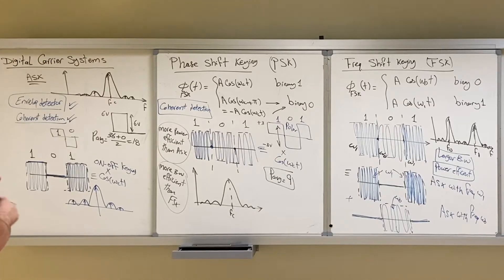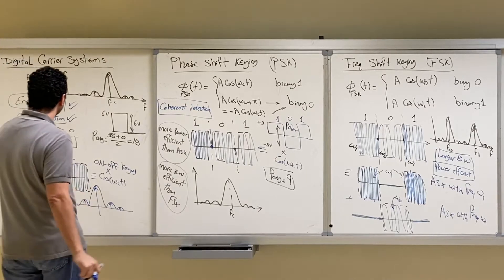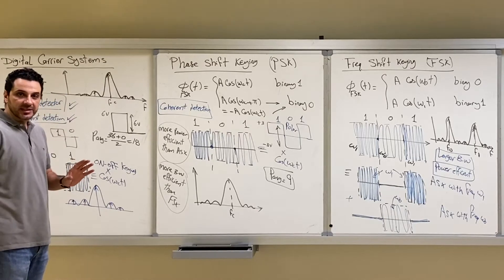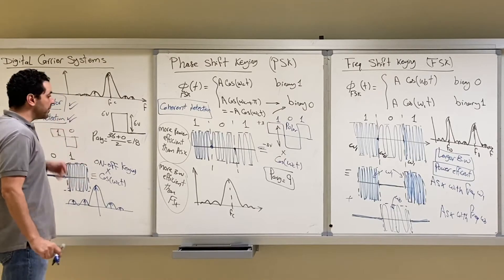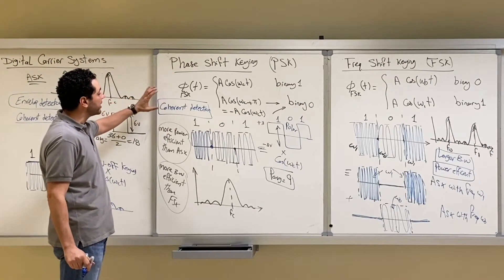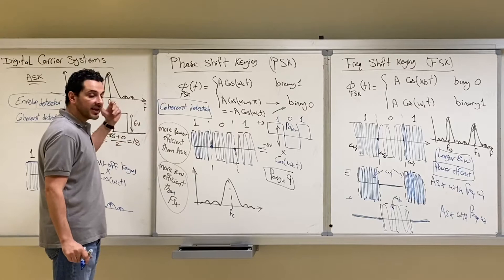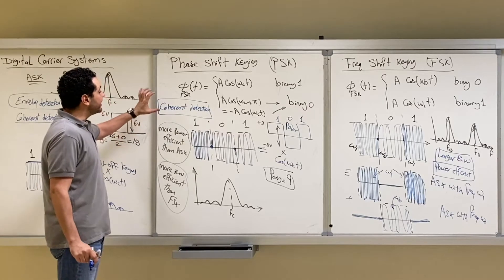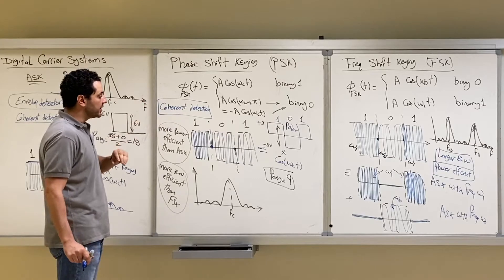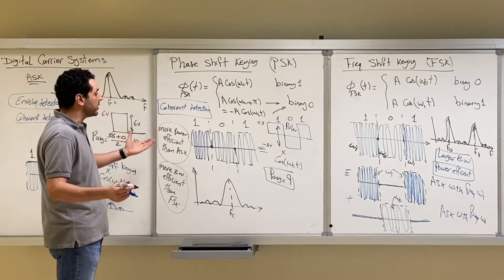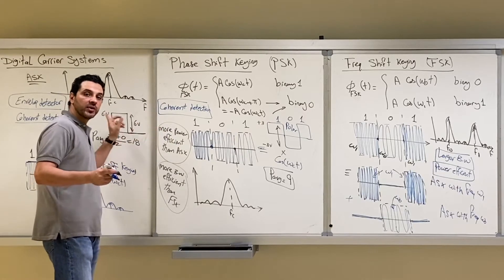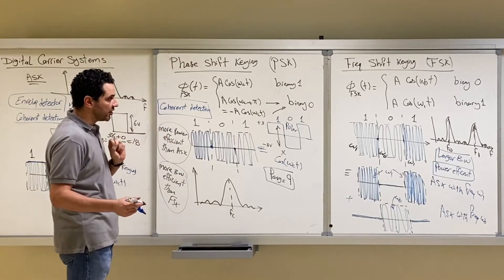In the previous video, we saw that for ASK, we can use an envelope detector or coherent detector. Theoretically speaking, if you have the ability to implement coherent detection, it's better to move to phase shift keying, which is more power efficient than ASK. But with PSK, you have to use coherent detection. That's why if you can implement coherent detection, PSK would be a better choice than ASK.